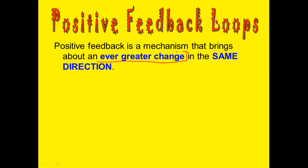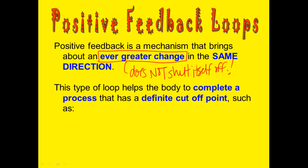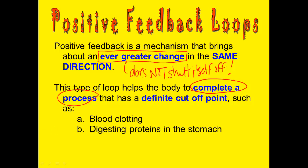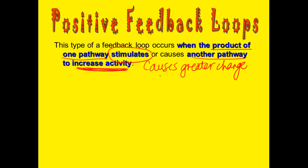Let's talk for a moment about positive feedback loops. A positive feedback loop causes ever-greater changes to happen in the same direction — these loops don't shut themselves off at a certain point; they just keep going in one direction until a change happens. This type of loop helps the body to complete a process. Examples include blood clotting, digesting proteins in your stomach, going through your menstrual cycle, and birth. This type of loop happens when the product of one pathway stimulates another pathway to increase its activity, causing greater and greater change in one direction.